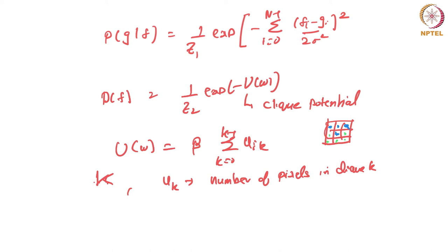This enforces smoothness. You prefer images where small neighborhoods have pixel values being almost the same. That is the smoothness you are enforcing with this kind of potential function.